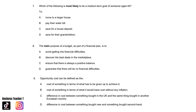Question seven: Which of the following is most likely to be a medium term goal of someone aged 40? A. Move to a larger house. B. Pay their water bill. C. Save for a house deposit. Or D. Save for their grandchildren. And the answer is A. Move to a larger house.